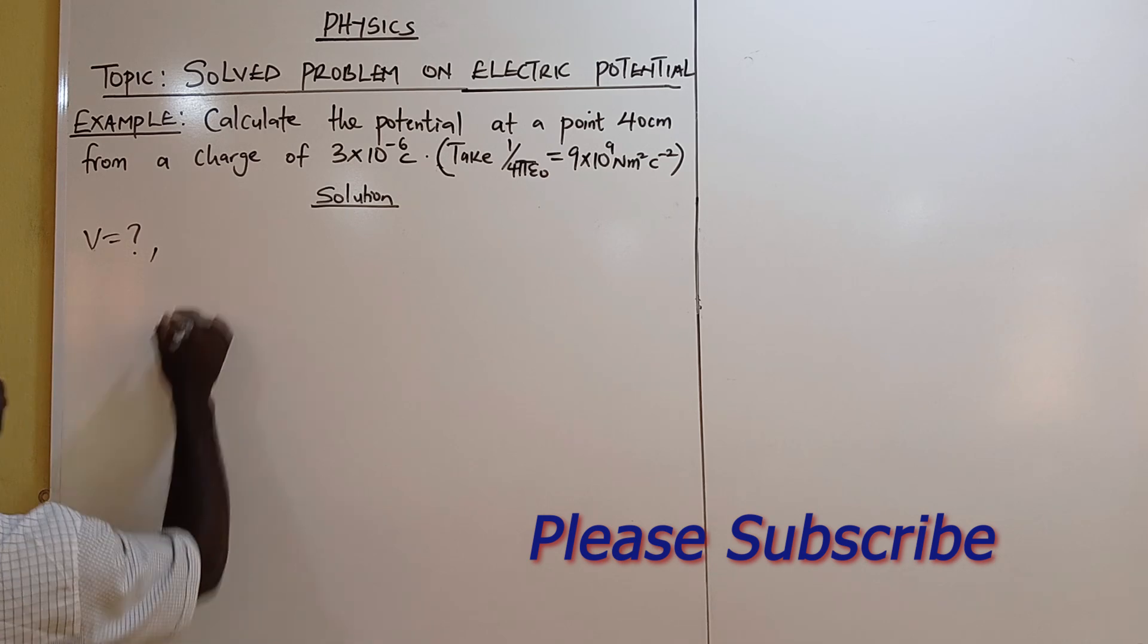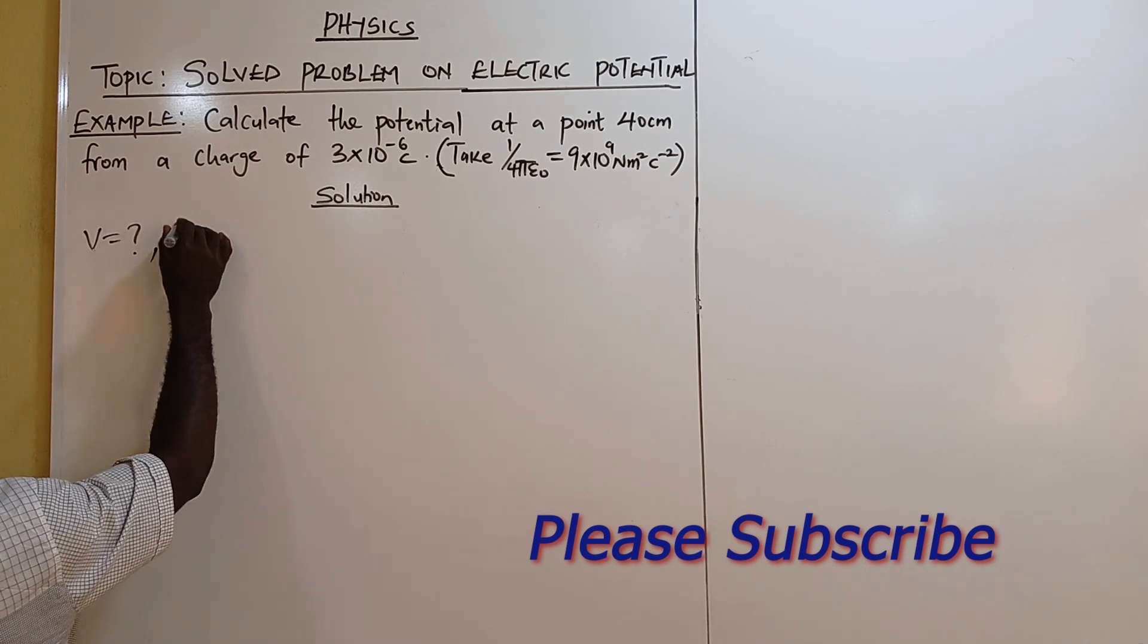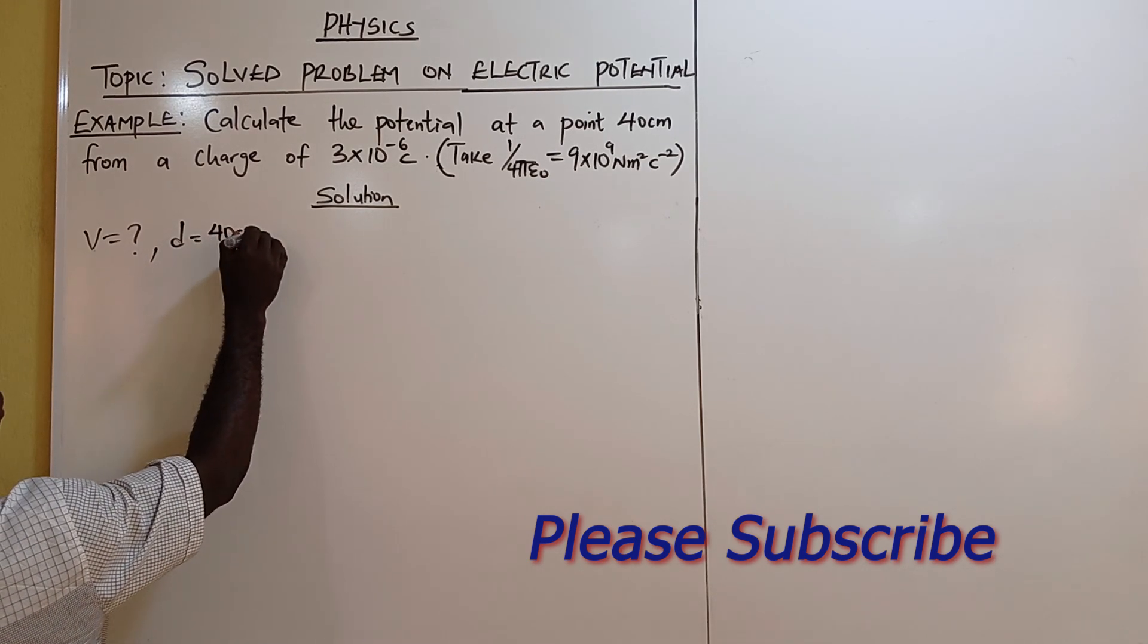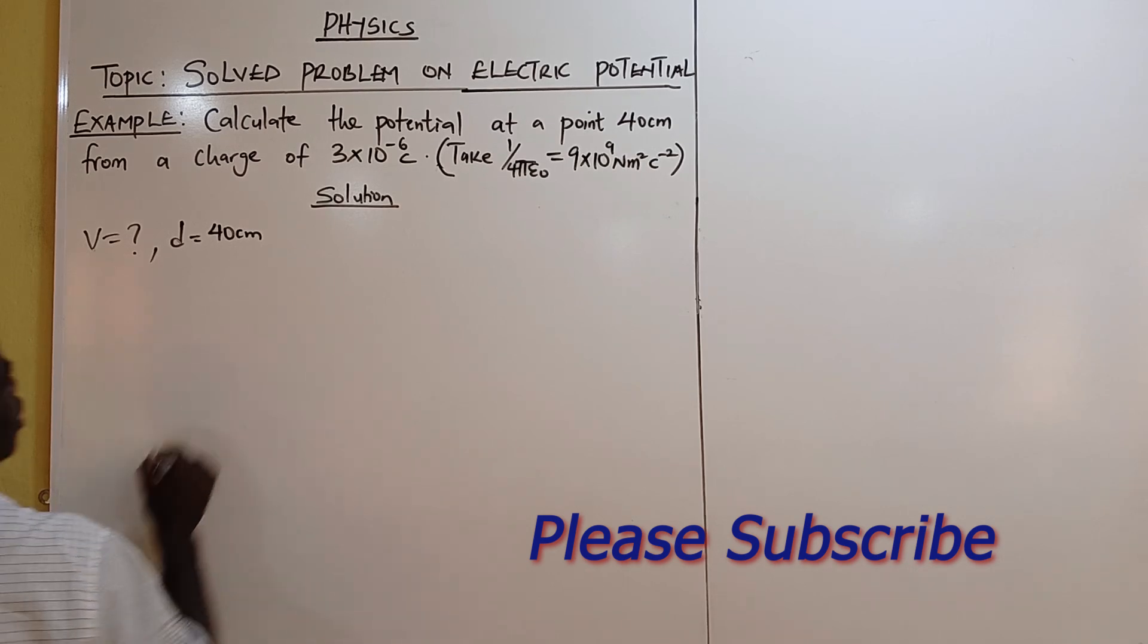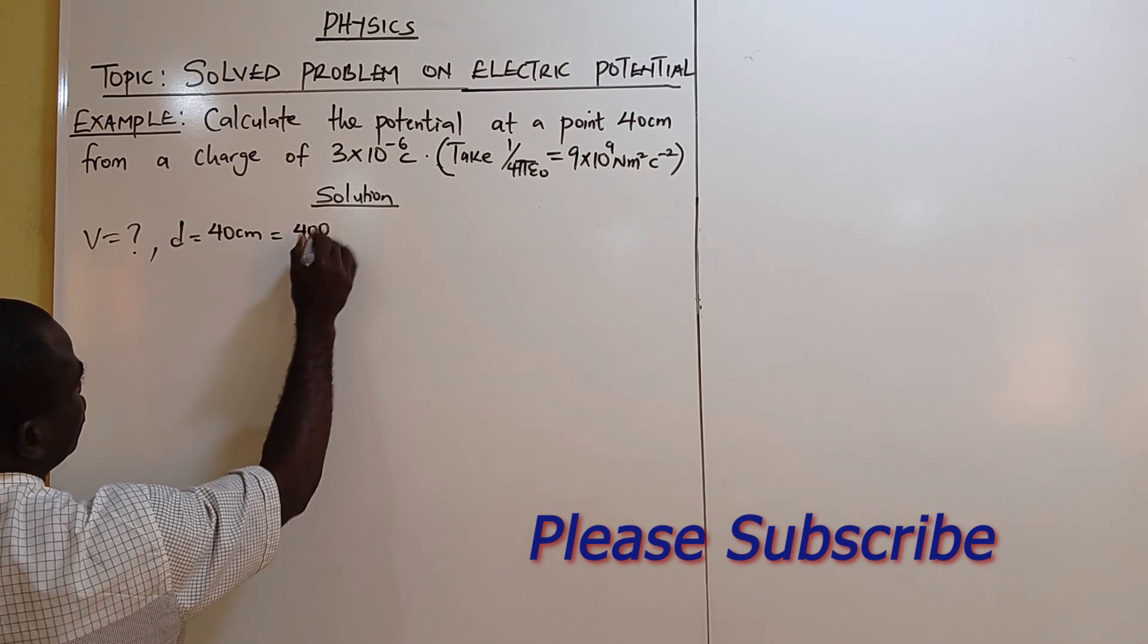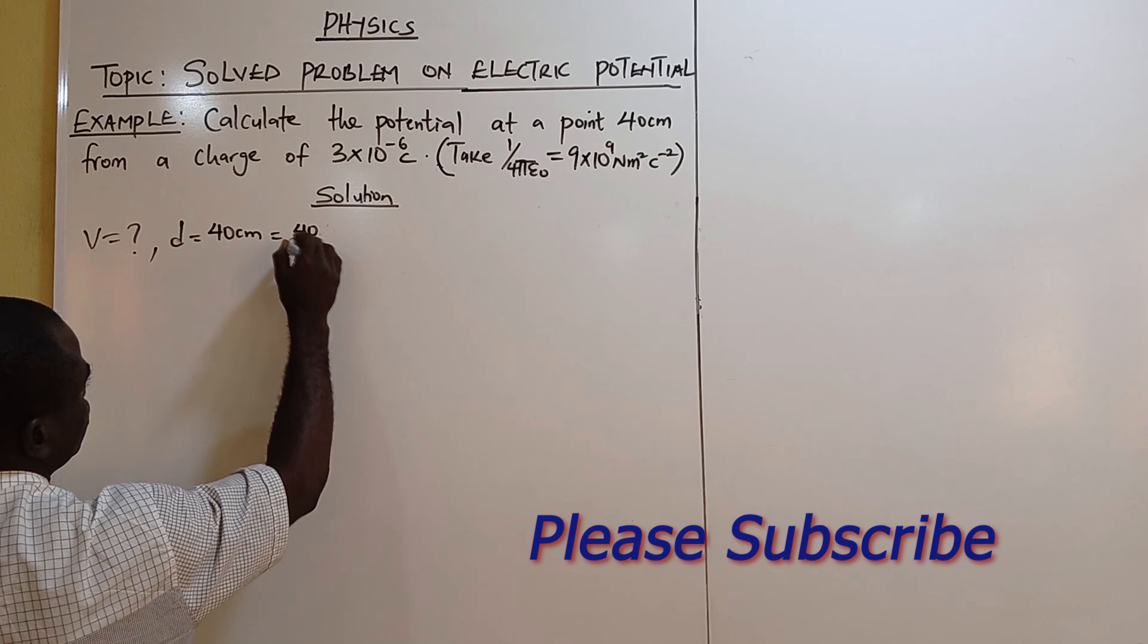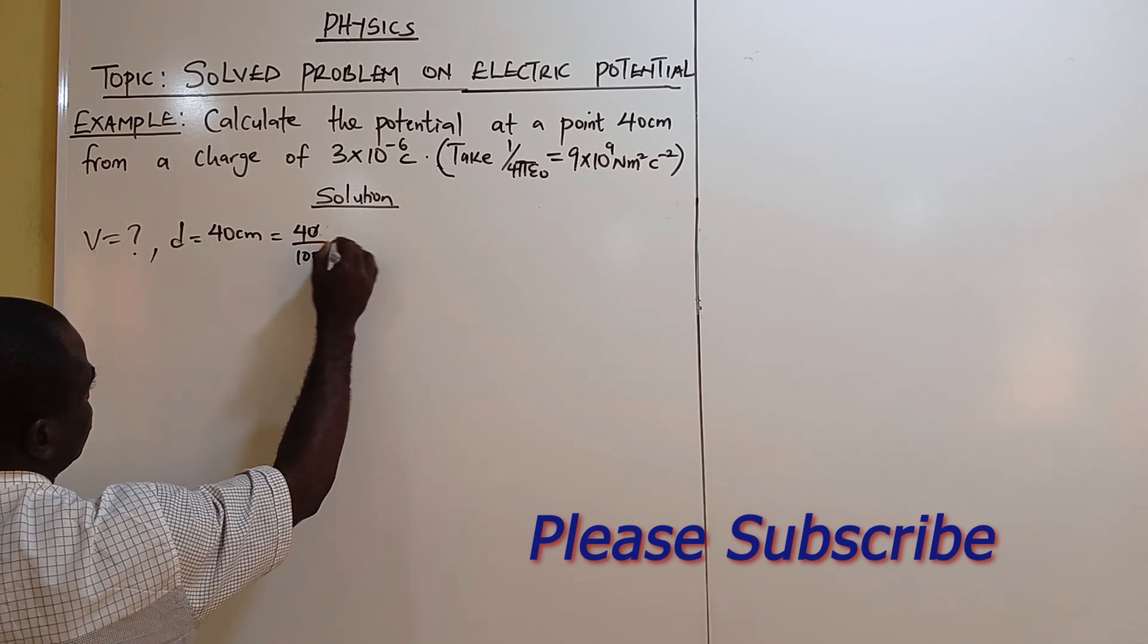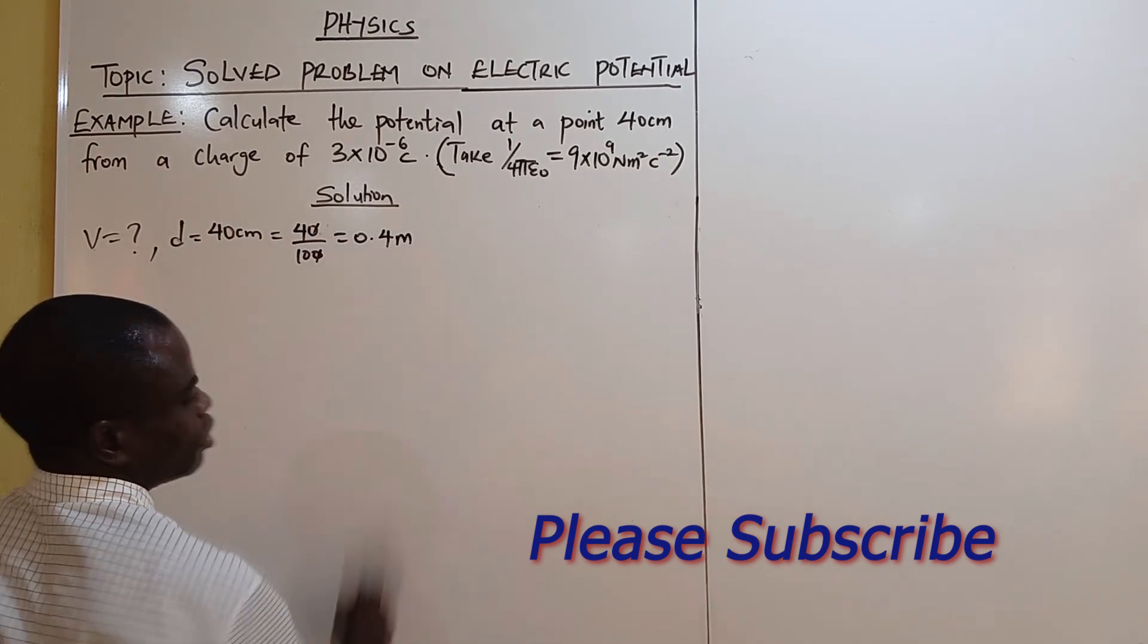Our distance is 40 centimeters and convert it to meters by dividing by 100. We have 0.4 meters.